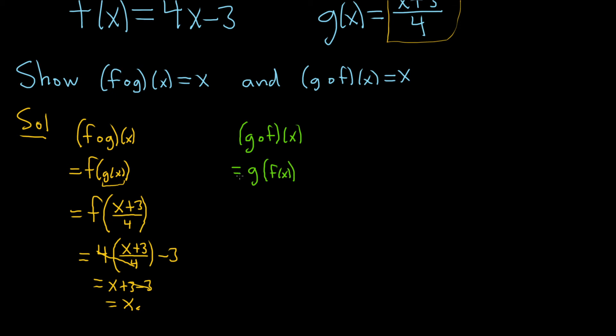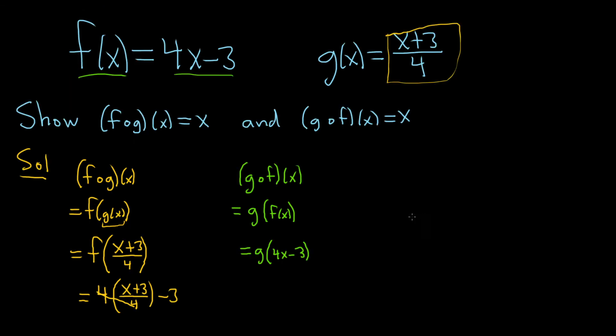And we'll start by replacing the inside piece just like before. So our inside piece is f of x which is 4x minus 3. So this is g of 4x minus 3. And now we look at g. Let me scroll up so we can see it better. g of x is x plus 3 over 4.